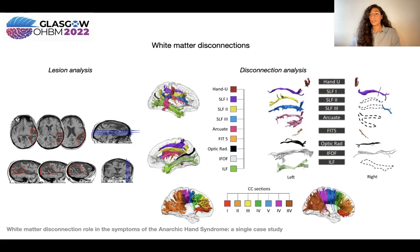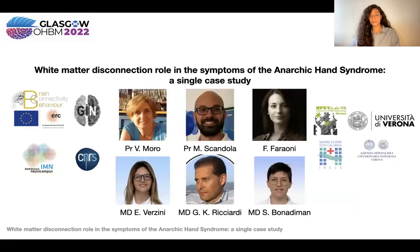In conclusion, anarchic hand might be a disconnection syndrome, and the involvement of multiple networks contributes to the symptoms displayed by the patients. I want to thank my co-authors, and thank you for your attention.